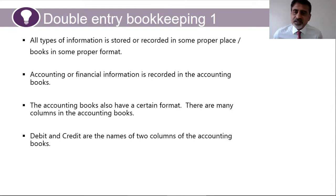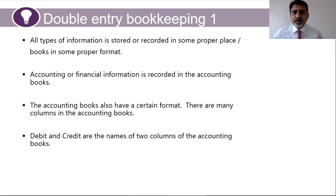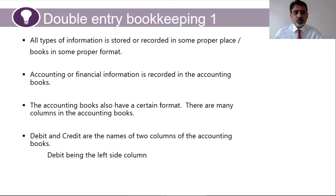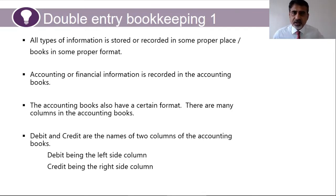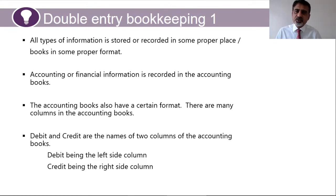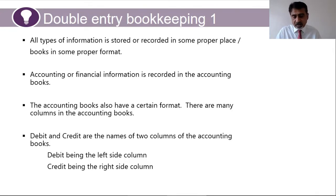Whenever you open an accounting book or journal, you'll see two columns: one is called debit, one is called credit — just like an attendance register has columns for student name and dates. So if somebody asks what is debit and what is credit, the simple answer is: debit and credit are the names of the two columns in the accounting book. Debit is the left-side column, credit is the right-hand column.